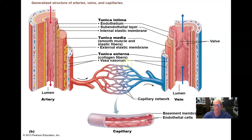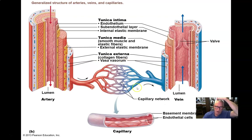The vasa vasorum is not found in all blood vessels. That's referring to a unique characteristic of extra-large vessels in which there's so much tissue that there's actually a vascular network — blood vessels — in the wall of the blood vessel. Blood capillaries are the smallest vessels, and they're essentially one-cell thick tubes made up of endothelial cells, so they don't have all these characteristic layers.